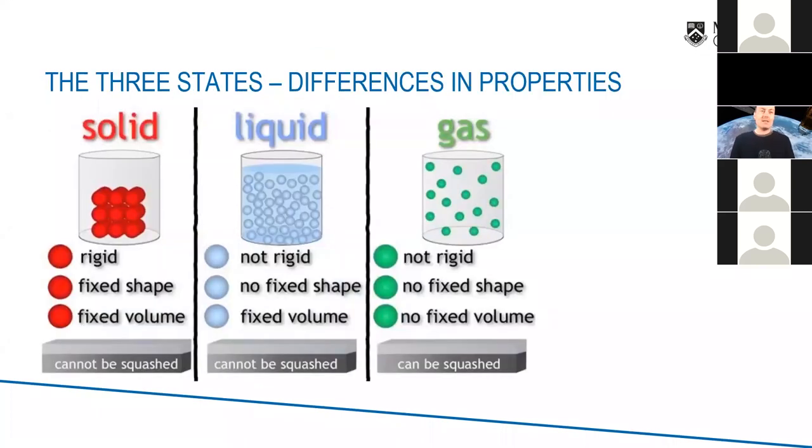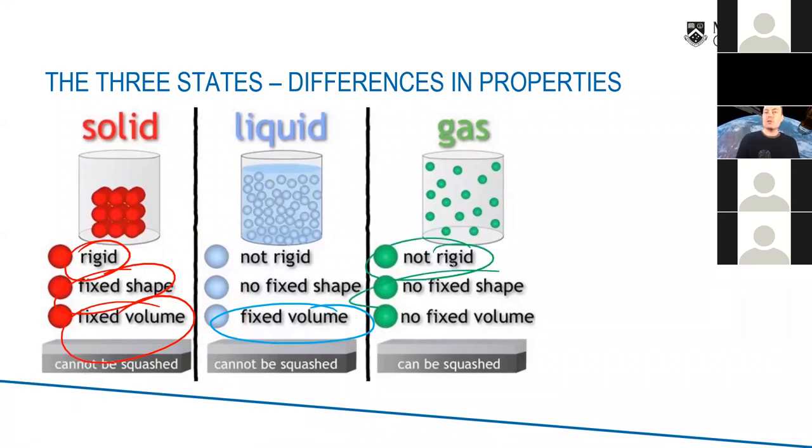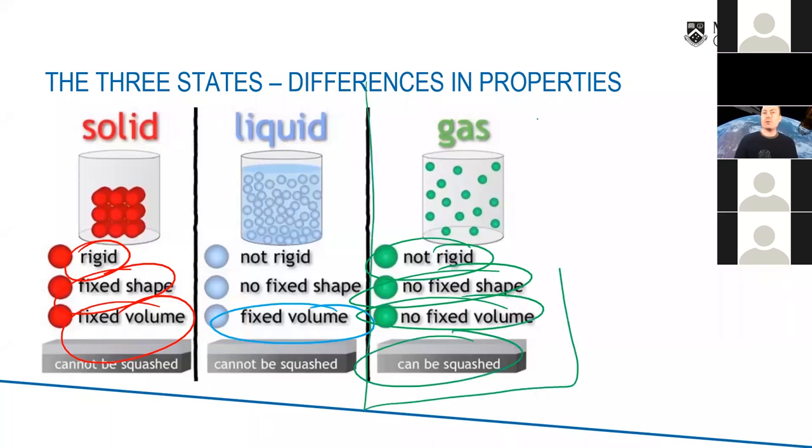This is very basic just to remind you that the states of matter are different. You know that solids have a rigid fixed shape and they have a fixed volume, they can't be squashed. Liquids also can't be squashed, but they're not rigid. They flow, they're a fluid, and they also have a fixed volume. Now gases are not rigid, not fixed shape, no fixed volume, and can be squashed. They are the most versatile of all. They are completely compressible because the gaps between the gas atoms are so great that most of the gas is empty space.